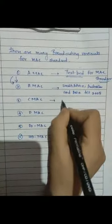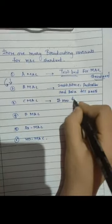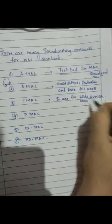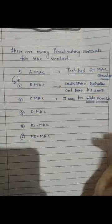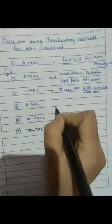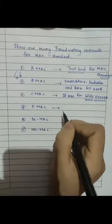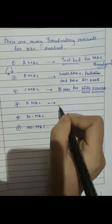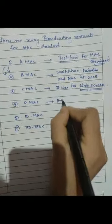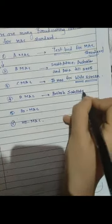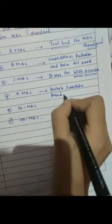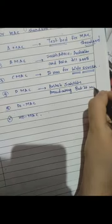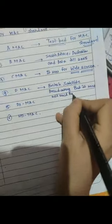The third one is C-MAC. It was used mostly for wide screens — it was a standard of transmission used for wide screens. Talking about D-MAC, it was a much more improvised version of these MAC standards. It is a variant of MAC that was developed by British Satellite Broadcasting, but it was not used for cable systems.